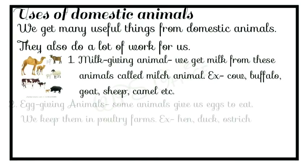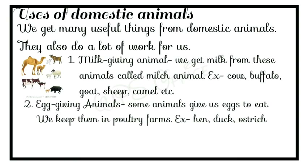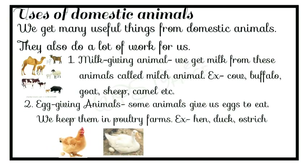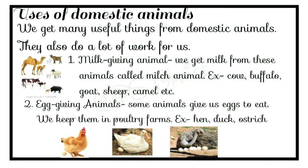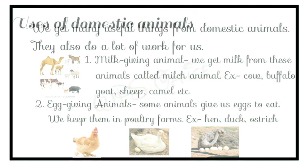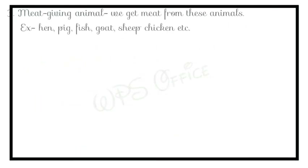The second category is egg-giving animals. Some animals give us eggs to eat. We keep them in poultry farms. For example, hen and duck are poultry animals. Ostrich also gives eggs — in fact, the ostrich egg is the biggest egg in the world, and from one ostrich egg, 32 omelettes can be made.